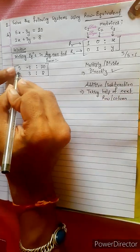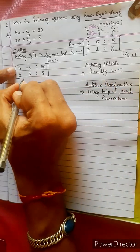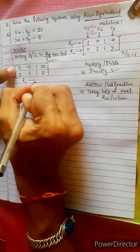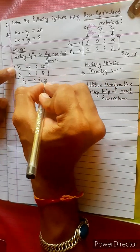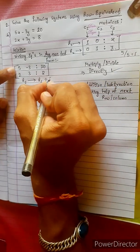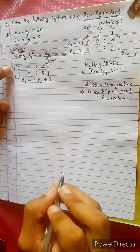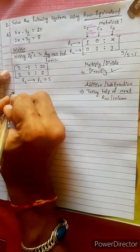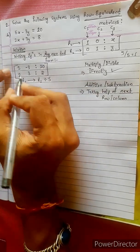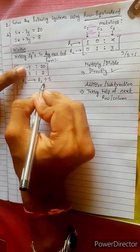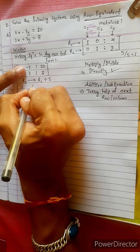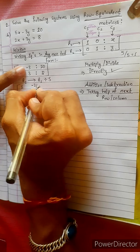Here we divide the number 5 by 5. R1 changes into R1 divided by 5. 5 divided by 5 is 1. Minus 3 divided by 5 gives minus 3 by 5.